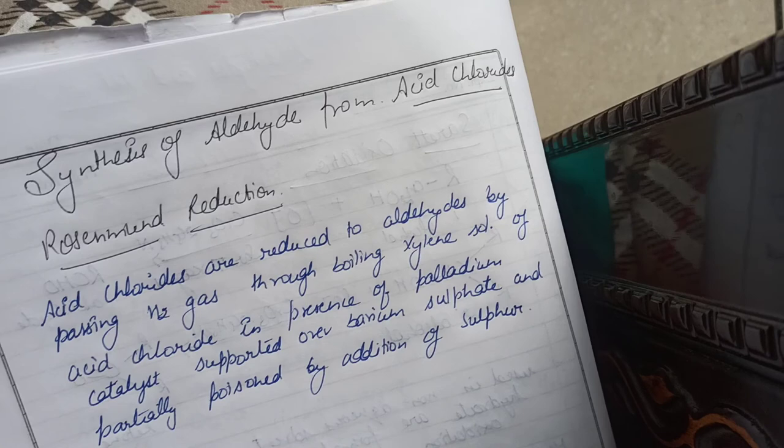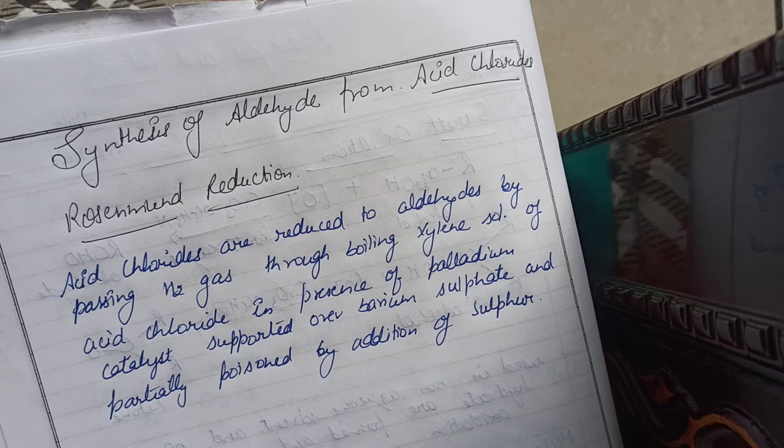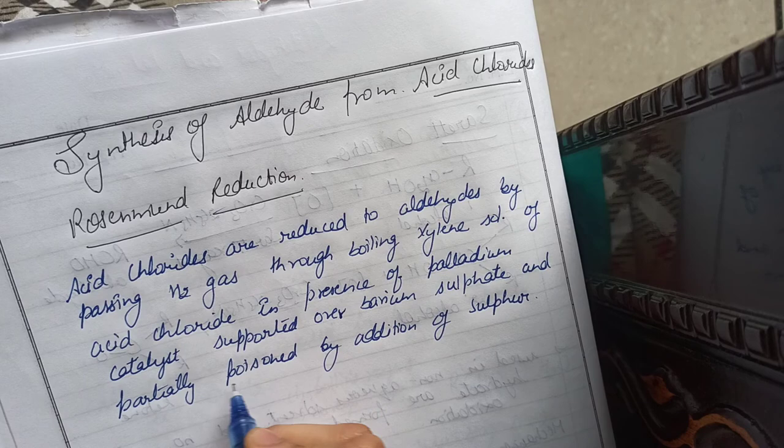The Rosenmund reduction means acid chloride are reduced to aldehyde by passing H2 gas through boiling xylene solution of acid chloride in the presence of palladium catalyst supported over barium sulfate and partially poisoned by addition of sulfur.